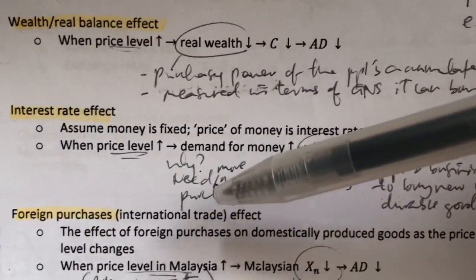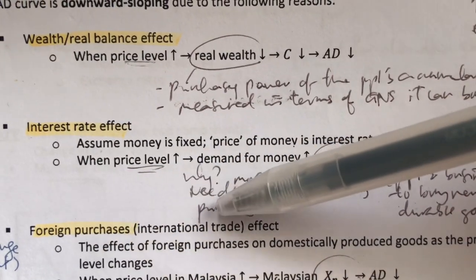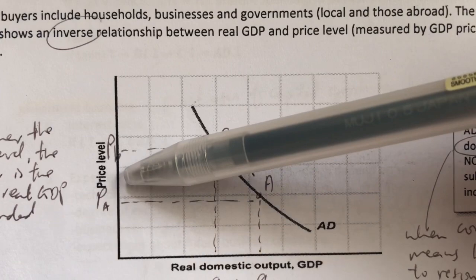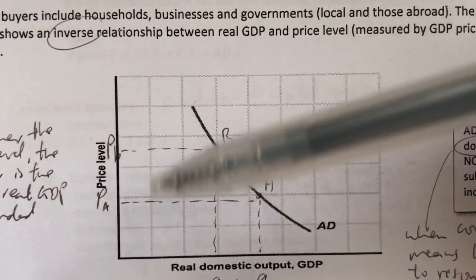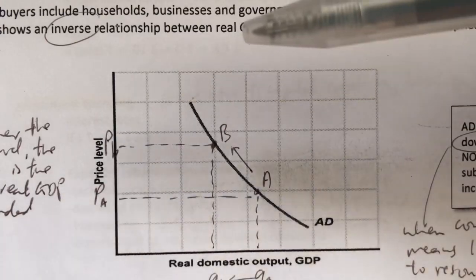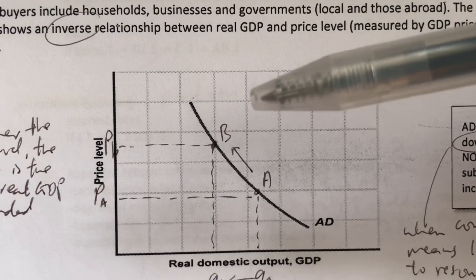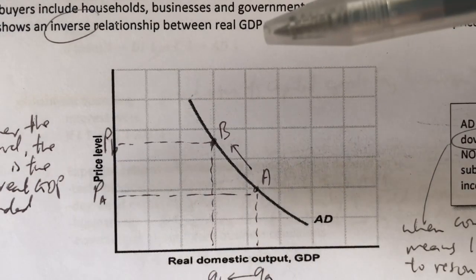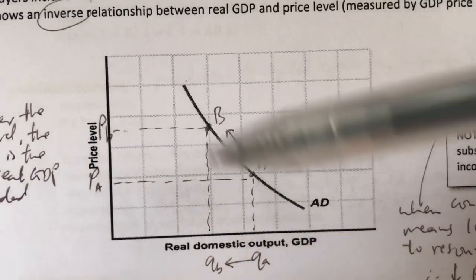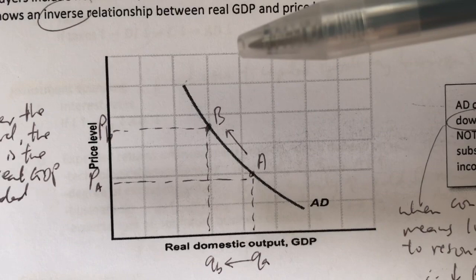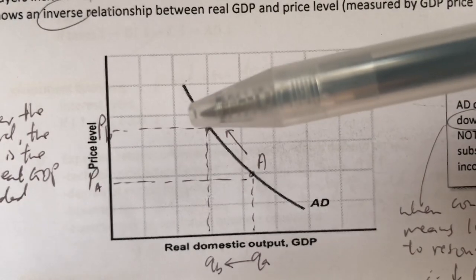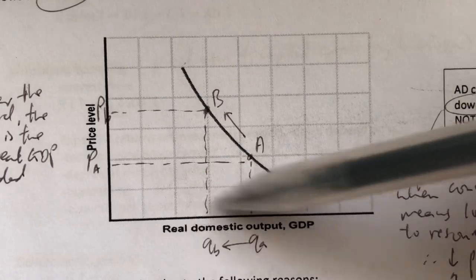The third reason is called the foreign purchases or international trade effect. When the price level in Malaysia increases, in terms of exchange rates, the ringgit appreciates. When the ringgit appreciates, it's more expensive for our goods to be bought by foreign buyers, so our exports will fall. However, we find it cheaper to buy outside goods, so our imports increase. When exports decrease but imports increase, our net export will fall. Net export is a component of aggregate spending, so that is why there's a fall in aggregate demand.